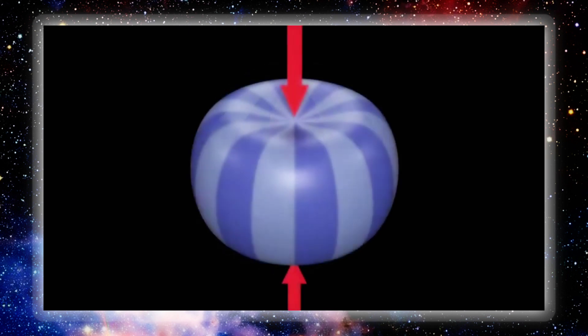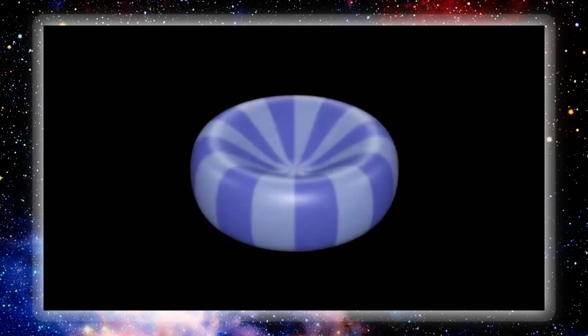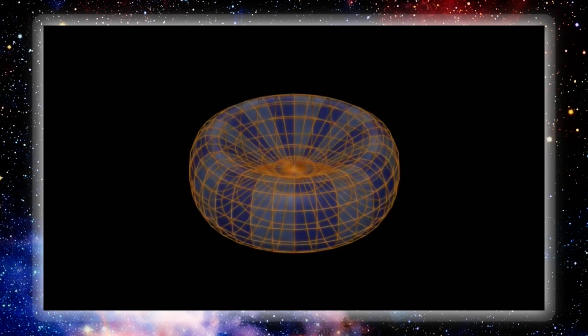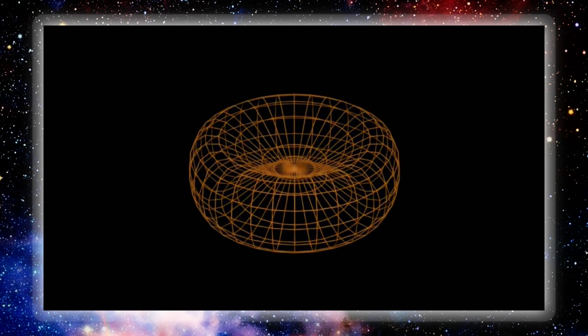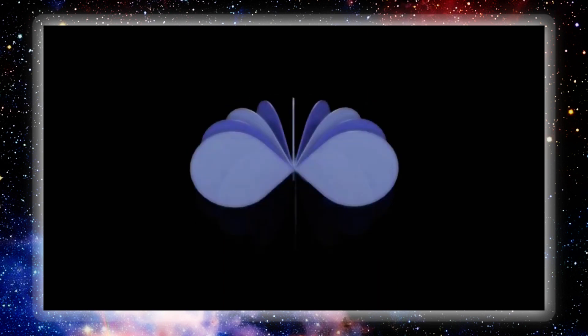By imploding a sphere and putting the north pole, which is rotating anticlockwise, against the south pole, which is rotating clockwise, you create a monopolar point on the equatorial plane. Segmenting the imploded sphere into eight planes creates 16 peripheral points, which when viewed in cross-section, reveal the infinity symbol.